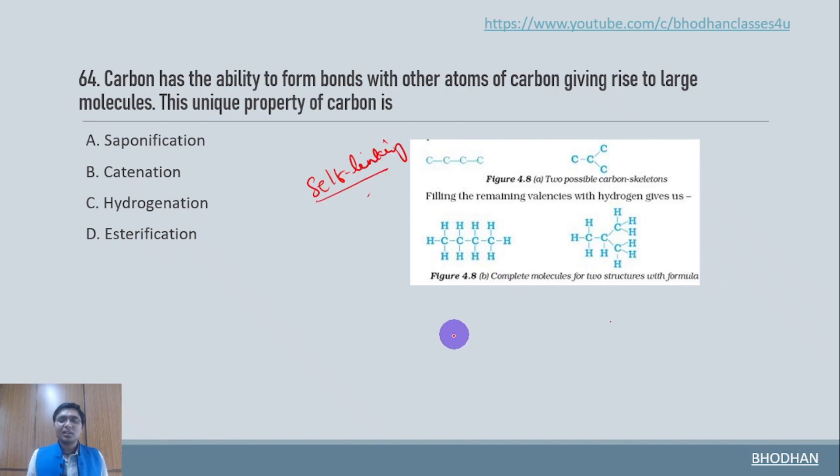So because of self linking it can form straight chains in this manner. It can form branch chains in this manner. And it can form rings as well. Like this. Here we have CH2 CH2 CH2 CH2 CH2. And this way. So this property is basically catenation.